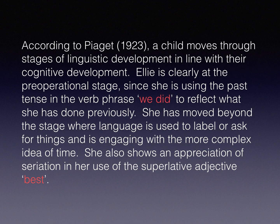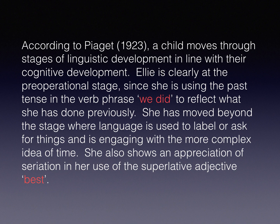According to Piaget in 1923, a child moves through stages of linguistic development in line with their cognitive development. Ellie is clearly at the pre-operational stage since she is using the past tense in the verb 'we did' to reflect what she has done previously. She has moved beyond the stage where language is used to label or ask for things, and is engaging with the more complex idea of time. She also shows an appreciation of seriation in her use of the superlative adjective 'fastest.' Seriation is the ability to put things in order — like good, better, best, or filling in number four, blank, five.